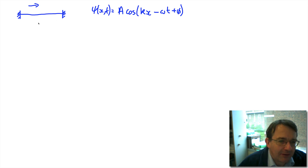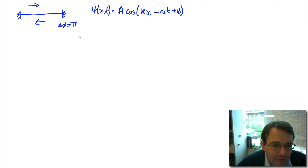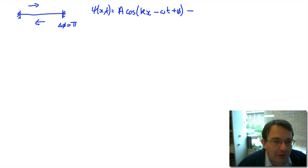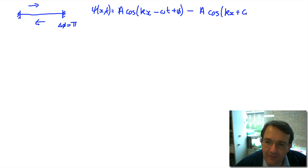When this wave reflects off the clamped end of the string, we're going to have a phase change of π. I can model that by flipping the sign of the wave — putting a minus sign in front — because of this phase change of π upon reflection. Now it's a wave travelling in the negative x direction: minus a times cosine of kx plus ωt plus φ, where the phase change comes in through that minus sign.